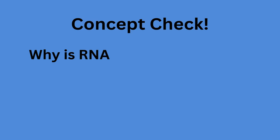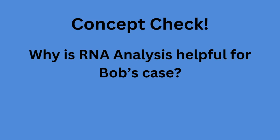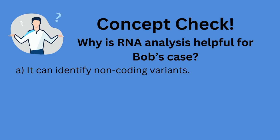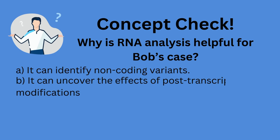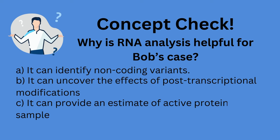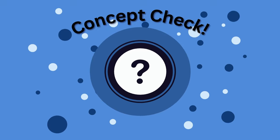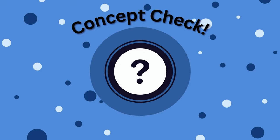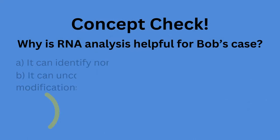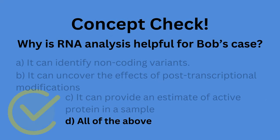Concept check: Why is RNA analysis helpful for Bob's case? A. It can identify non-coding variants. B. It can uncover the effects of post-transcriptional modifications. C. It can provide an estimate of active protein in the sample, rather than a static view. D. All of the above could be helpful here upon analysis. Now take a moment to pause the video and answer this question. The correct answer is D — all of the above could be helpful here upon analysis. Feel free to rewind the video if you need to review this.